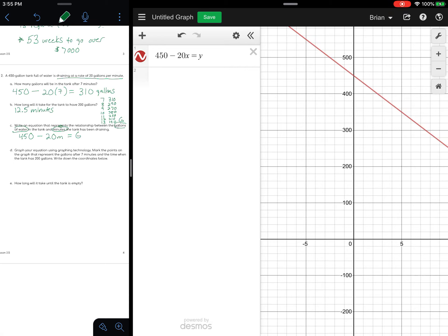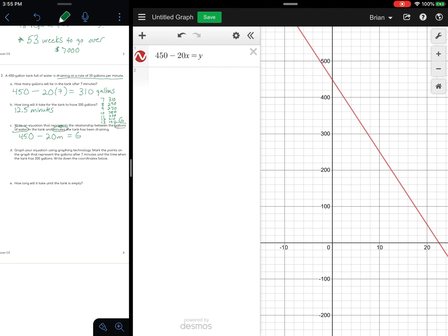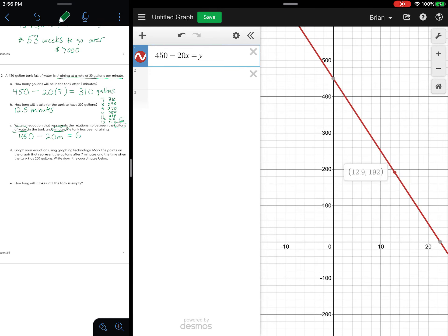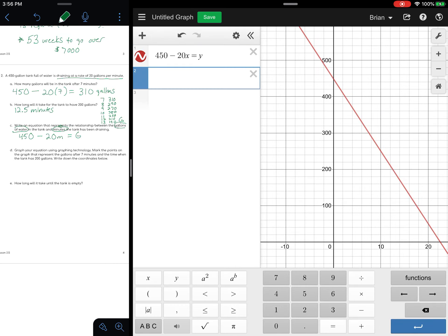I'd like to get my gallons, my Y axis up to 450, so I'm going to pinch on my Y axis until I get that to be 450 or somewhere up there. Oh, there's my line. And then for minutes, at 7 minutes we had 310 and at 12.5 minutes I was down to 200, so maybe I'll pinch this a little bit. Now I have a nice window to use.